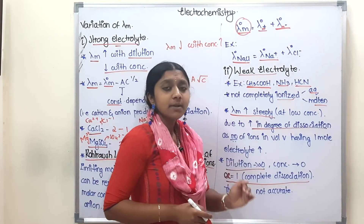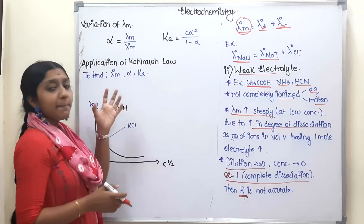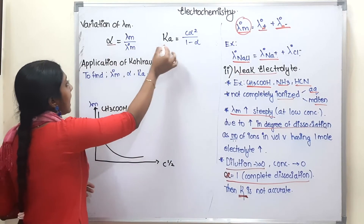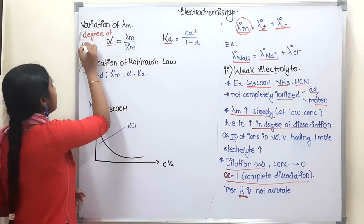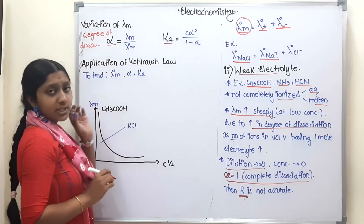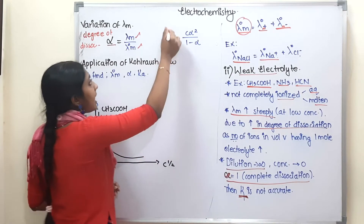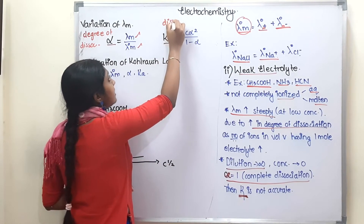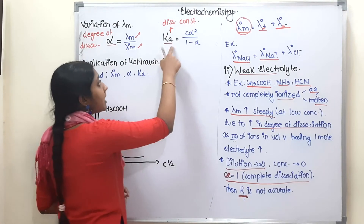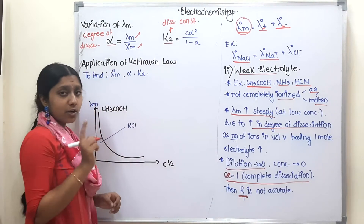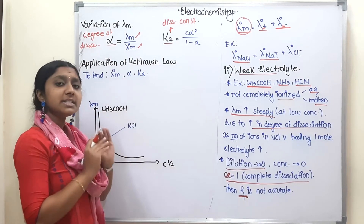Now, the important formulas: Alpha (degree of dissociation) equals lambda m divided by lambda naught m, where lambda m is molar conductivity and lambda naught m is limiting molar conductivity. Ka (dissociation constant) equals c·α² divided by (1 − α), where c is concentration. These are very important formulas for many exam questions.